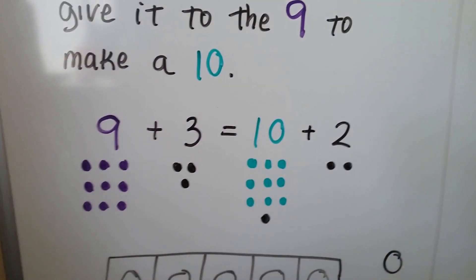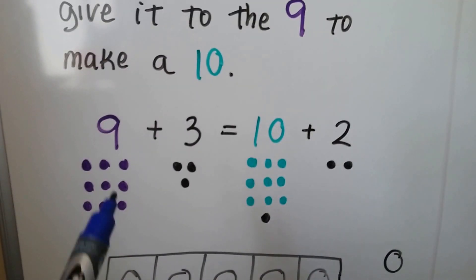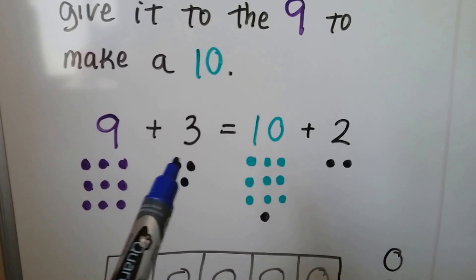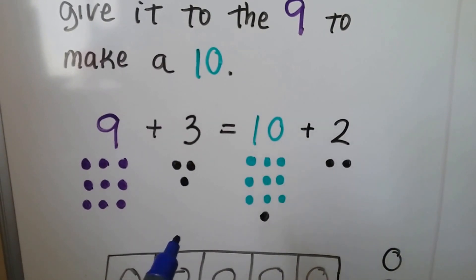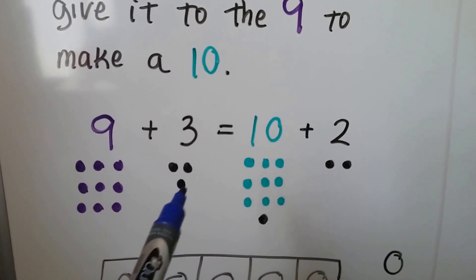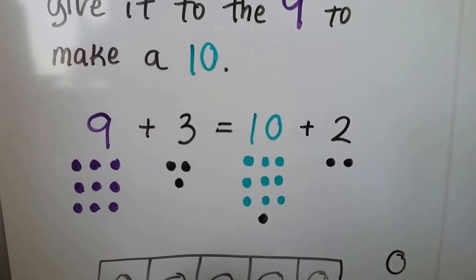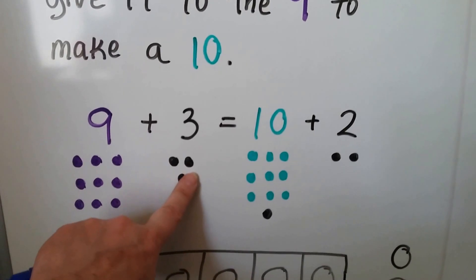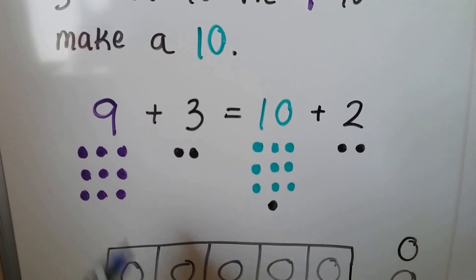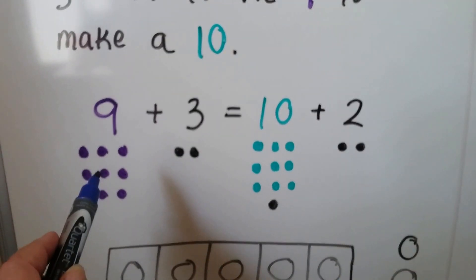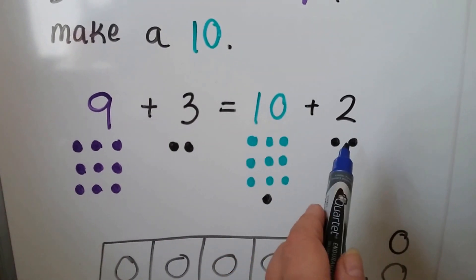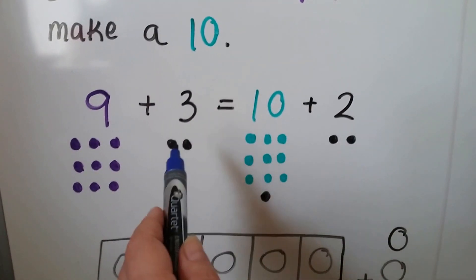If we had 9 plus 3, we can take this little one away right here — we can take this one away and give it to the 9. What will happen is we'll have 2 on this side.